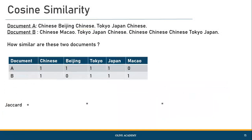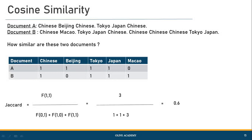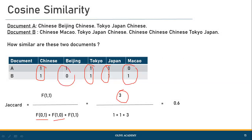If you are unsure about the Jaccard coefficient formula, please watch my previous videos on proximity measures. Applying the formula directly: there are three (1,1) pairs, f(0,1) is one, and f(1,0) is one, giving a total of three plus one plus one equals five in the denominator. The Jaccard coefficient value is 0.6, which means these two documents are 60 percent similar according to the Jaccard index.